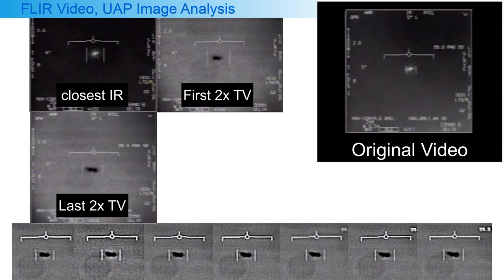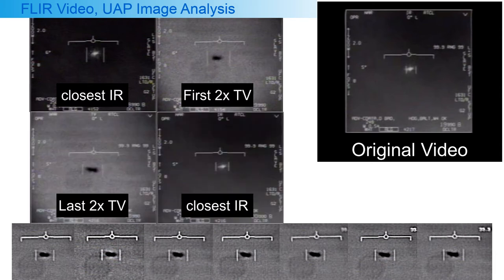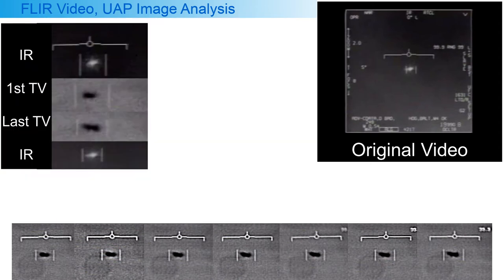I do the same with the last good TV image and its closest IR image. The IR image is a bit more elongated, but still not the same size as the TV image of the object. I show the images close together here.